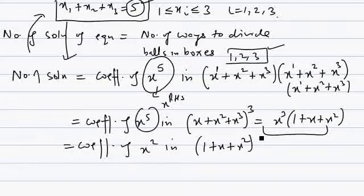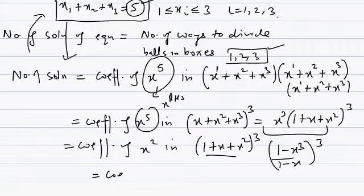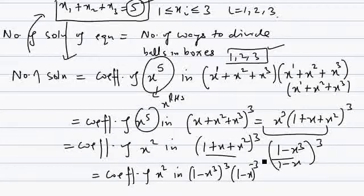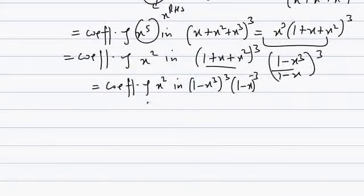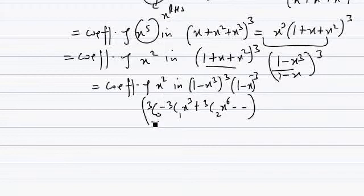We apply the GP formula: 1 + x + x² = (1 - x³)/(1 - x). So (1 + x + x²)³ = (1 - x³)³ · (1 - x)⁻³. We need the coefficient of x² in (1 - x³)³ · (1 - x)⁻³. Expanding (1 - x³)³ using binomial theorem gives: 3C0 - 3C1·x³ + 3C2·x⁶ - ... Only the 3C0 term can contribute to x².